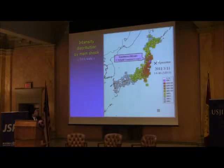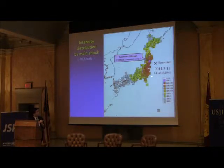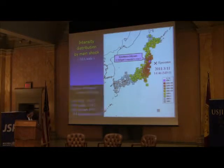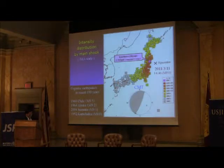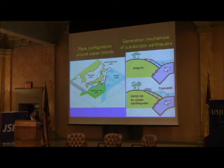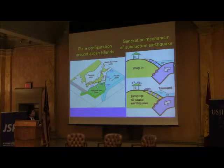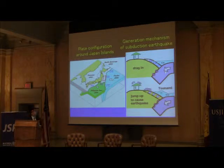The magnitude of this earthquake is 9.0, which is the largest recorded in Japanese history of seismic observations. And this earthquake is the fourth largest in the last 100 years. The mechanism of this earthquake is represented in such a diagram — this is a well-known mechanism of an inter-plate earthquake subducting, and it jumped up after the accumulation of strain.